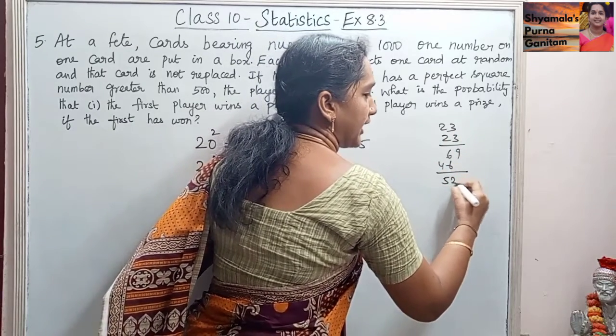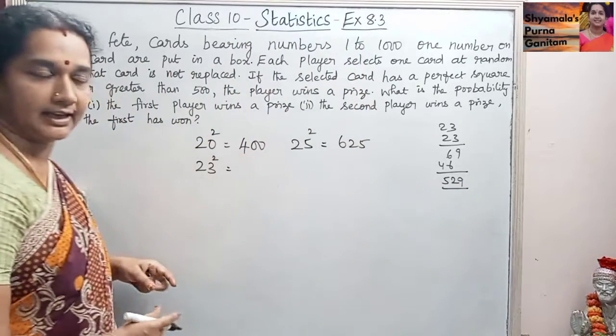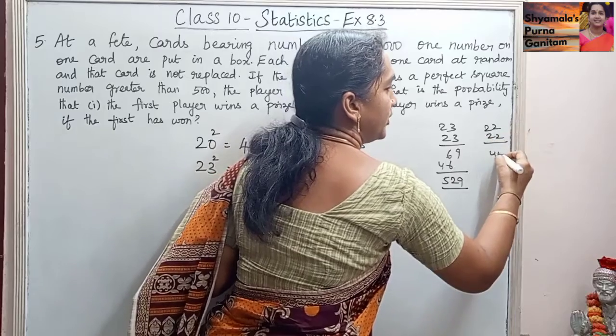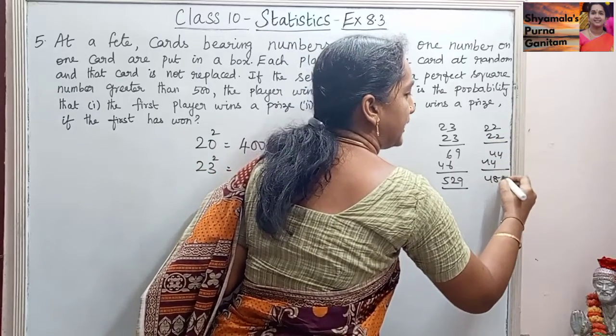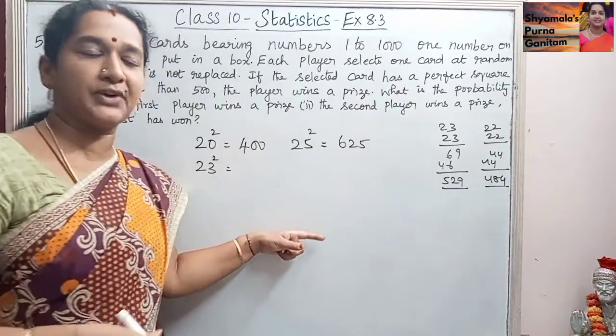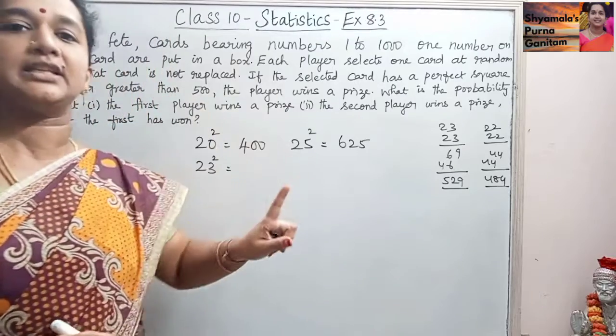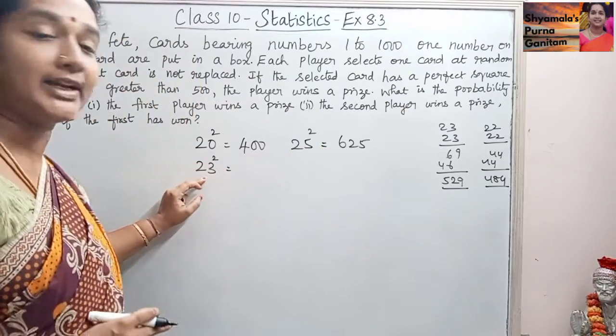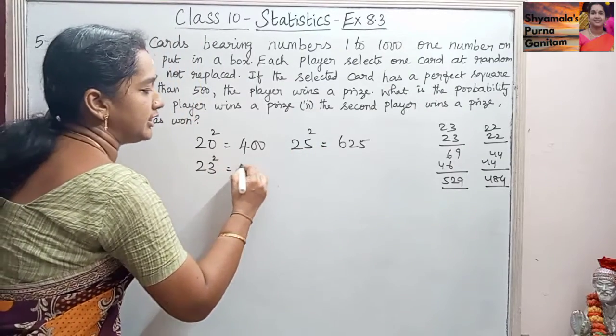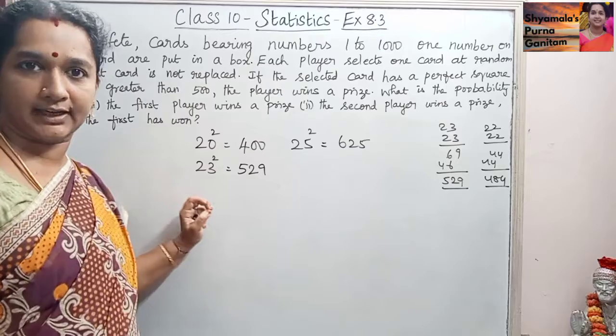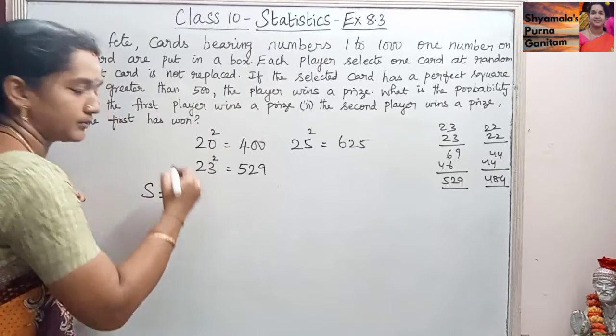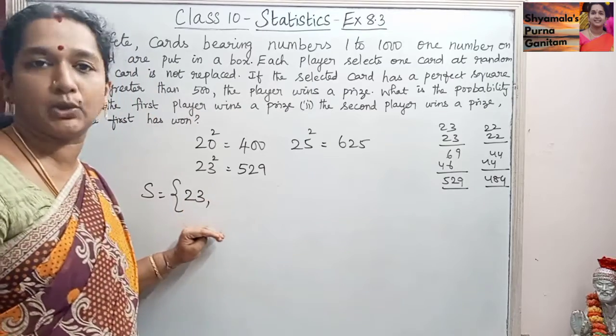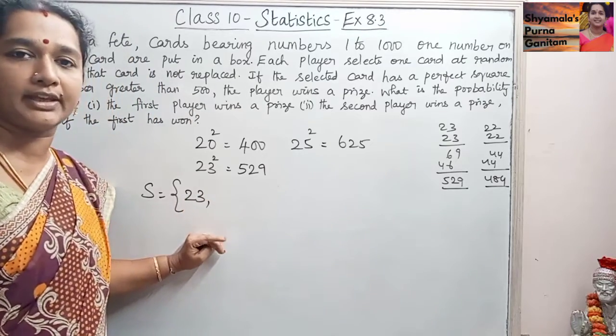So that one will be 529. If we take 22, 22 into 22, we get 484 only, that is less than 500. So the first number, first square number card that is greater than 500 is 23 square, so we are getting it as 529. So the sample space will be, first number will be, first card will be 23.